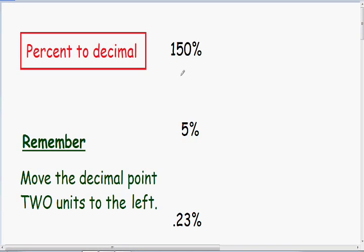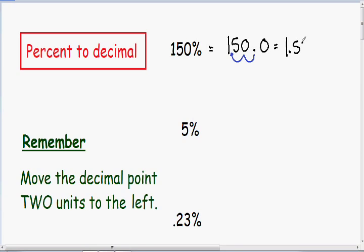We have 150 percent. The first thing I'm going to do is rewrite this with a decimal point — 150 percent is certainly equal to 150.0 percent. And like I said before, in order to change it into a decimal, we need to move the point two units to the left. So I'm going to do that right now: one, two. And after we move our decimal point, we can erase our percent sign. The 150.0 becomes 1.500.